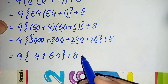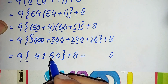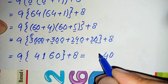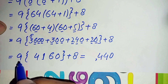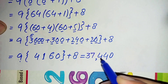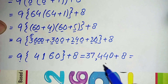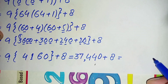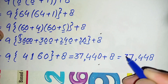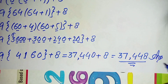Multiplying 9 by 4160: 9×0 = 0, 9×6 = 54 (carry 5), 9×1 = 9 plus 5 = 14 (carry 1), 9×4 = 36 plus 1 = 37. So we get 37440. Adding 8: 37440 + 8 = 37448. So the final answer is 37448.